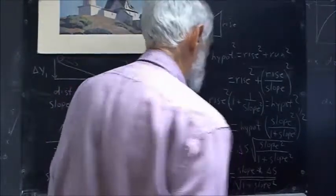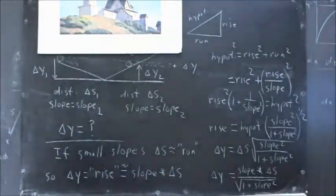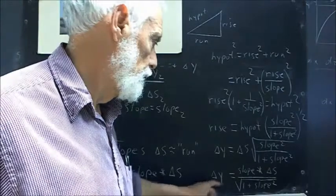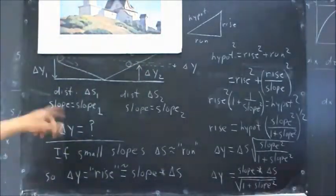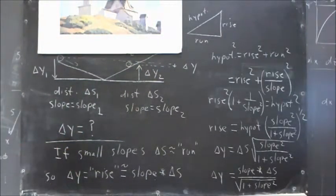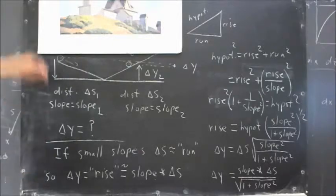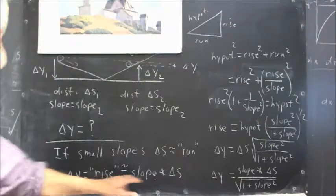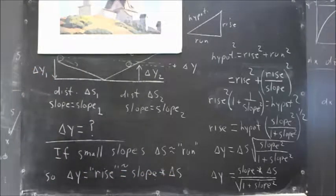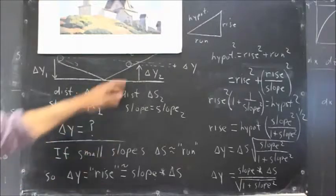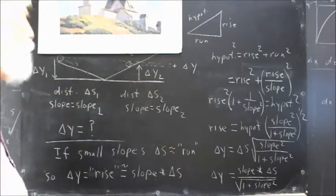So if we do have slopes that aren't small, we would want to do this. We'd want to use this expression. In this case, though, we're just going to use the small slope approximation. So what's delta Y1? Well, it's the slope times delta S1. Slope 1 times delta S1. And delta Y2 is slope 2 times delta S2.